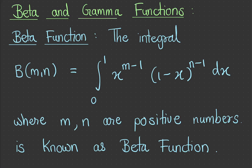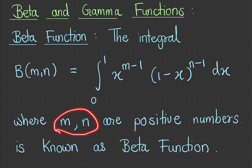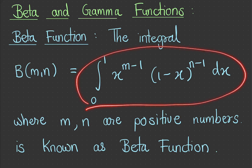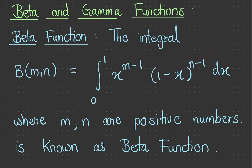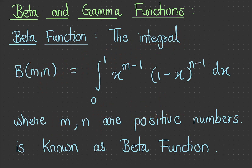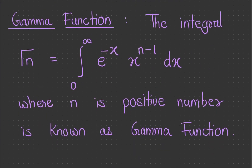In this video we are going to see beta and gamma functions. The beta function is denoted by capital B(m, n), defined as the integral from 0 to 1 of x raise to m minus 1 into 1 minus x raise to n minus 1 dx, where m and n are positive numbers. This is also called Euler's integral of the first kind.